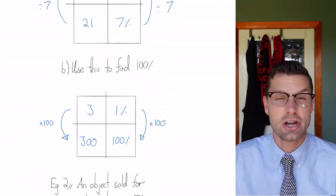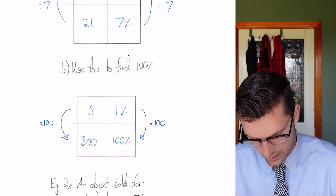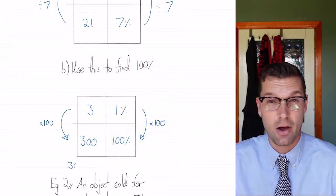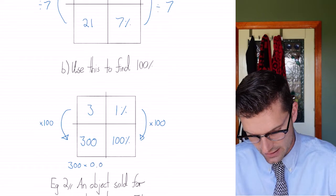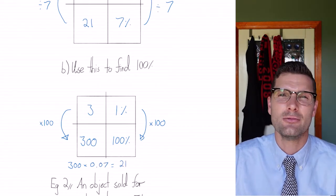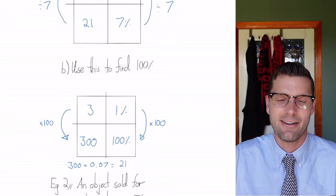You can check this is correct. If I go 300 multiplied by seven percent, or 0.07, that is equal to 21, so I know that I've got it right. Nothing wrong with checking your answer.